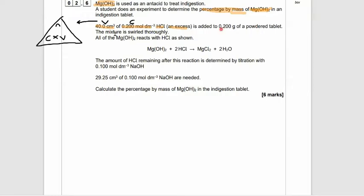Now, this hydrochloric acid is reacted with a 0.2 gram powder tablet. That's obviously containing the magnesium hydroxide, so that's an impure tablet. All of the magnesium hydroxide in the tablet reacted with the HCl in this reaction below. And we can see there's a 2 to 1 ratio here. That's the important thing.